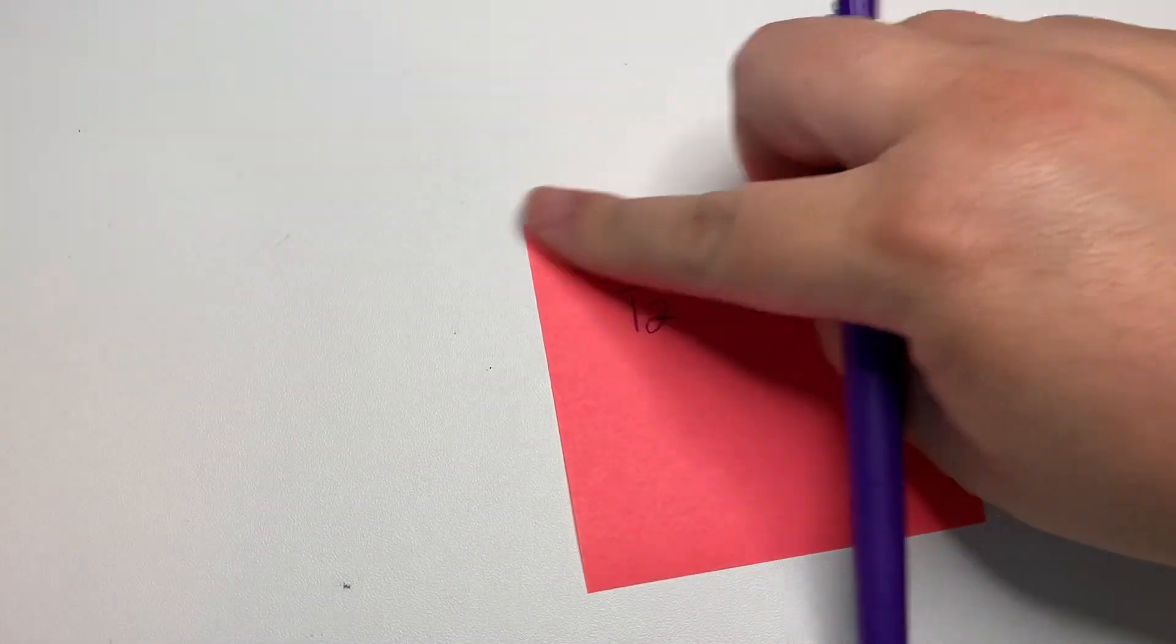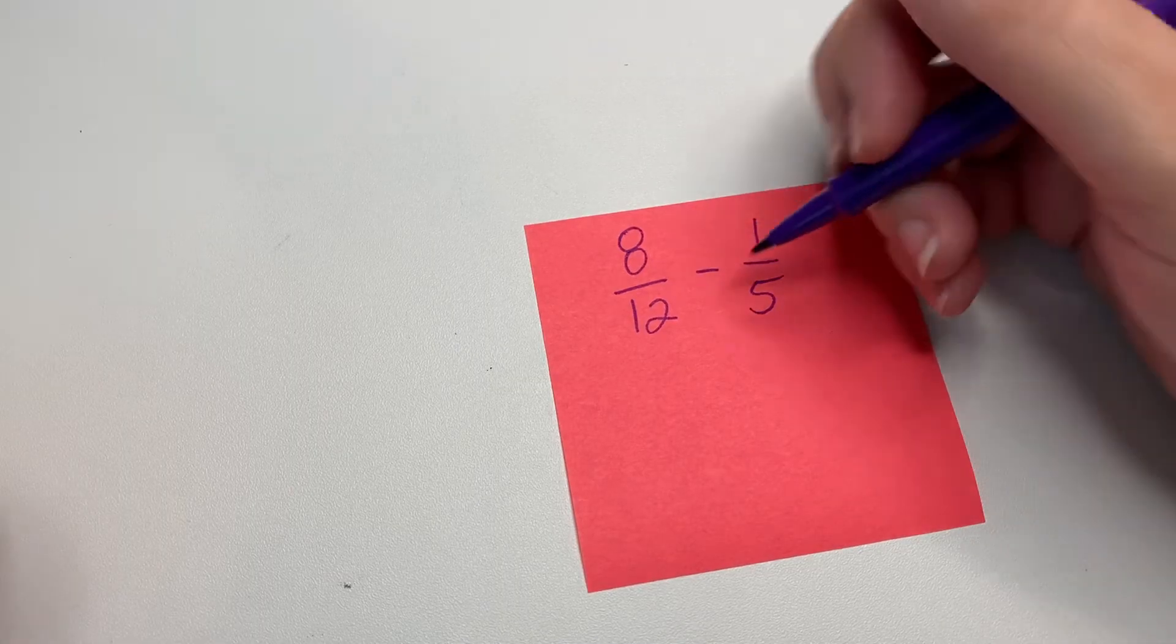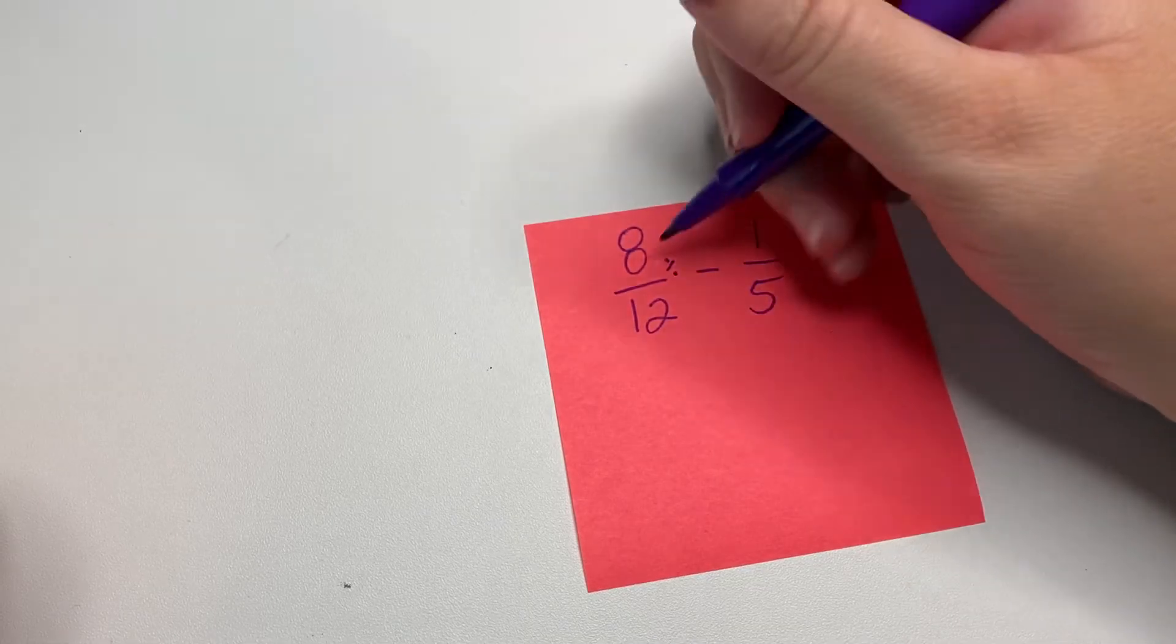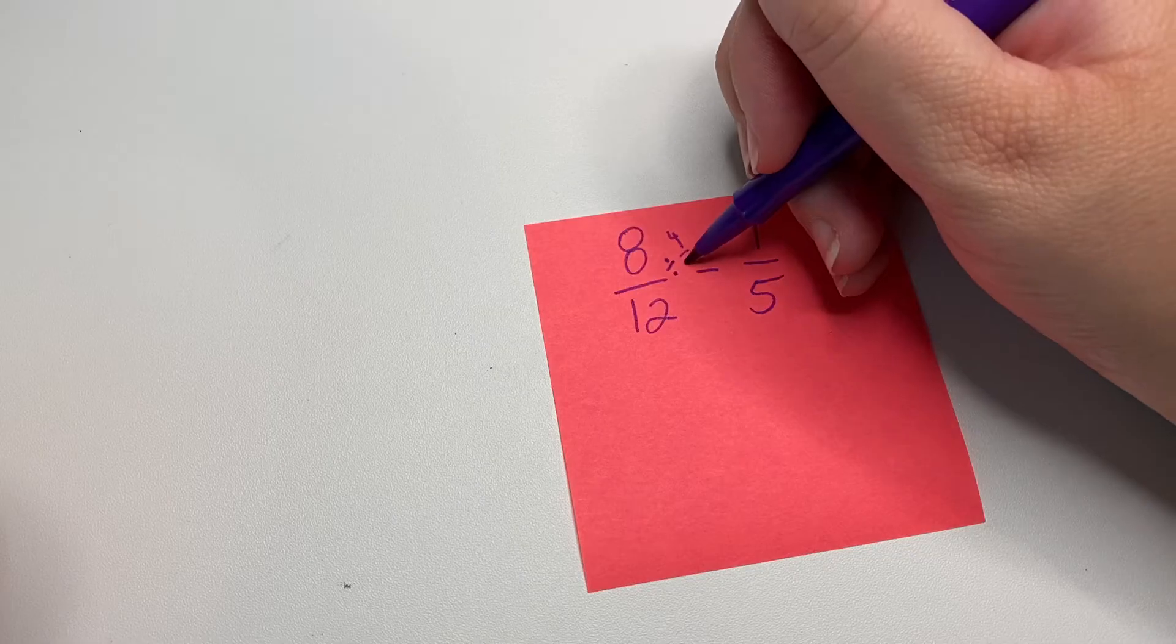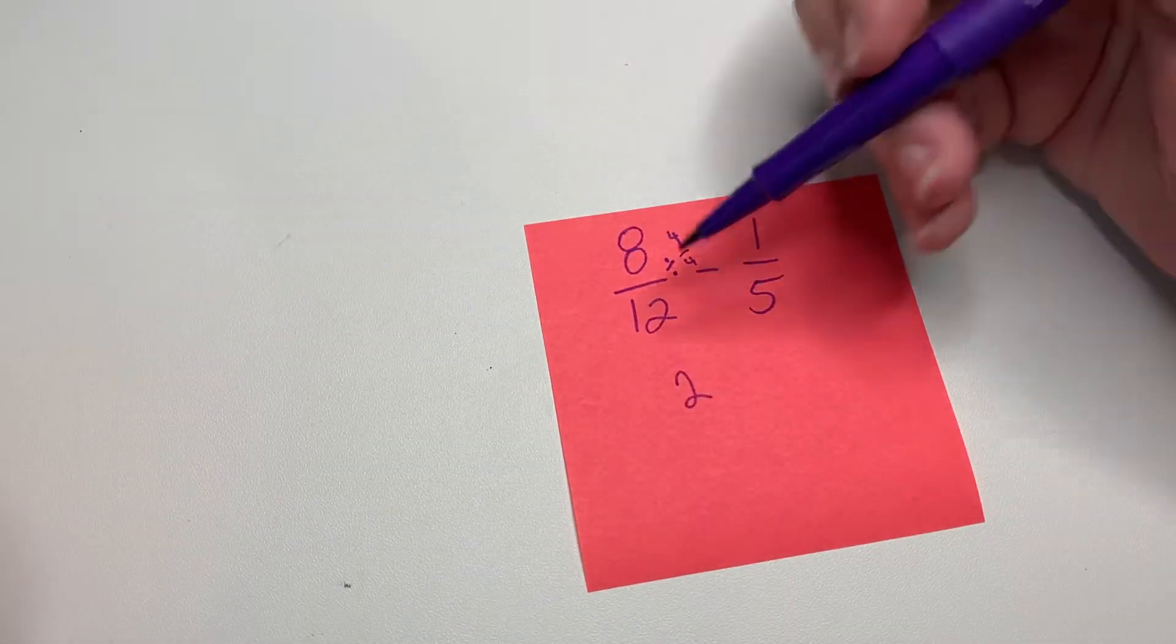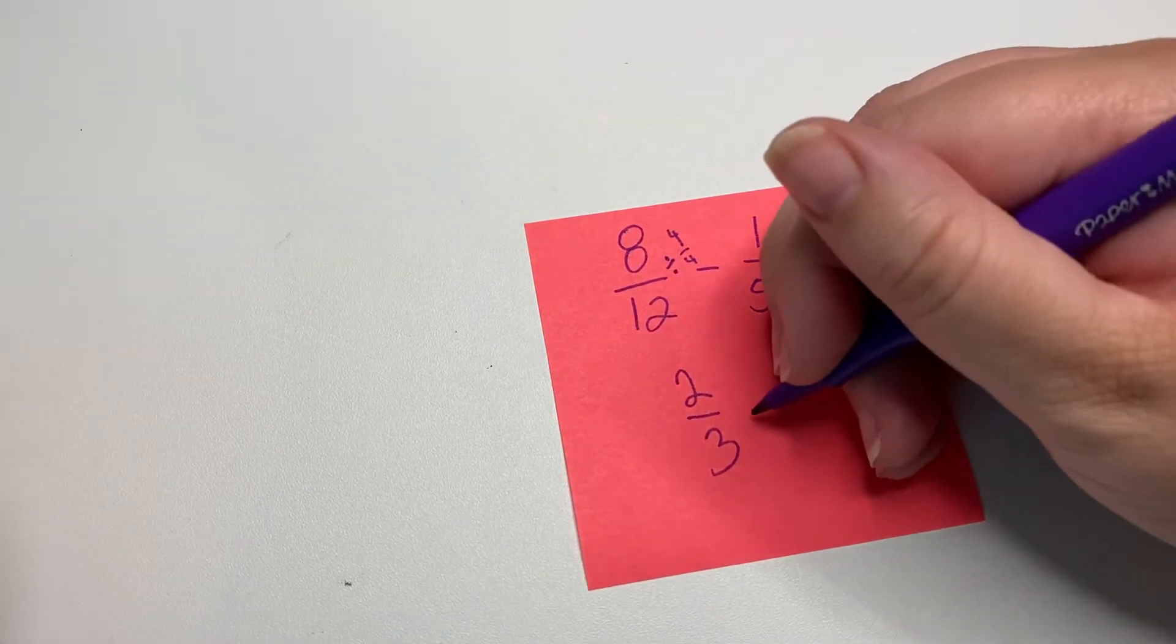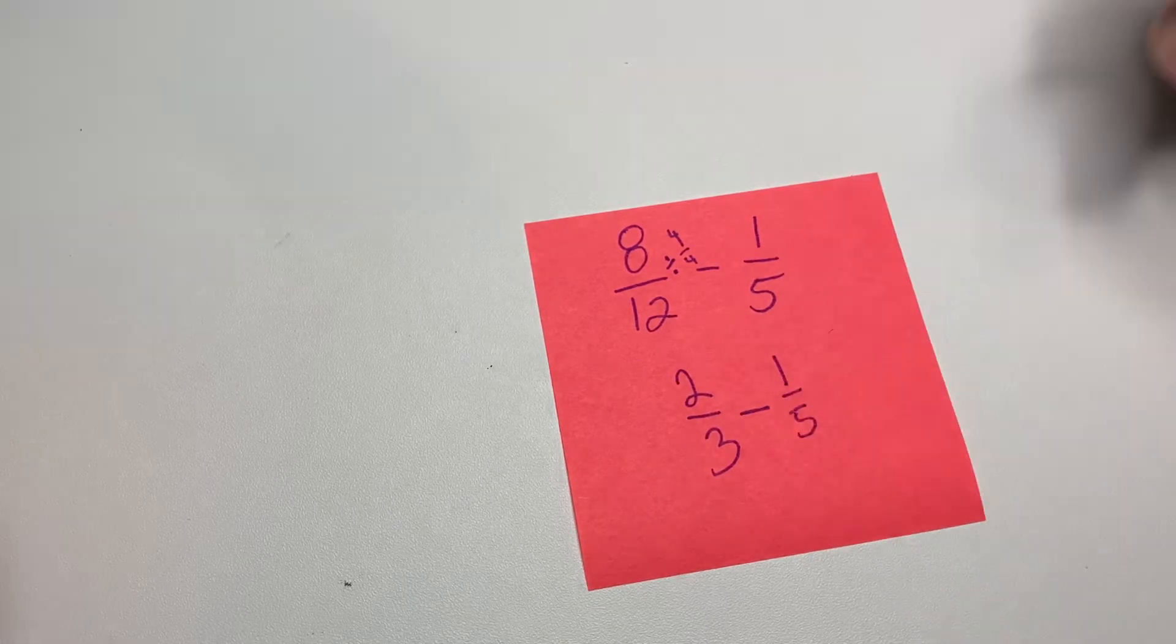In this one, only one of the fractions can be simplified, so it's on this side. And just because I did that last time was a little confusing, we're going to divide both of these by 4, 4 over 4. So 8 divided by 4 is 2, 12 divided by 4 is 3. So 8/12 is actually the same thing as 2/3, and we don't need to simplify the 1/5.